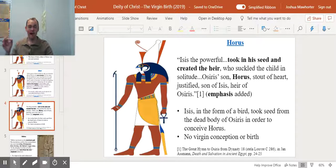Now, here's how the conception takes place. See if this sounds like the virgin birth. Isis, the powerful, took in his seed and created the heir who suckled the child in solitude. Osiris' son, Horus, stout of heart, justified son of Isis, heir of Osiris. So Isis, in the form of a bird, took the seed from the dead body of Osiris, or at least revived him enough that she could procreate with him, in order to conceive Horus.